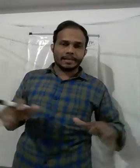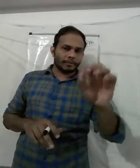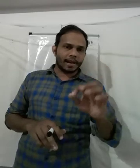A square means every side is equal, so each side is equal. So we are multiplying side into side — side by side — and we will get the area.